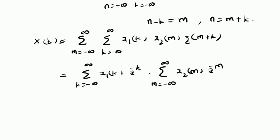By grouping all terms that have k and all terms that have m separately, we get: summation k from minus infinity to plus infinity of X1 of k times Z to the power minus k, multiplied by summation m from minus infinity to plus infinity of X2 of m times Z to the power minus m. By definition, these are the Z transforms of X1 and X2 respectively. Therefore, X of Z equals X1 of Z multiplied by X2 of Z, proving that convolution in the time domain is multiplication in the Z domain.